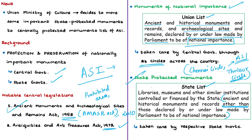The Thrissur circle also takes care of national monuments in Thrissur, Ernakulam, Thiruvananthapuram, and Wayanad districts of Kerala. The Delhi circle takes care of national monuments in the National Capital Territory. State protected monuments are protected by state governments through their respective departments of archaeology. Each state has legislated its own state laws for protection and conservation, and the ASI has no role to play in case of state protected monuments.